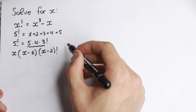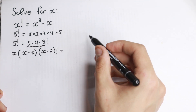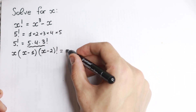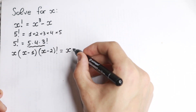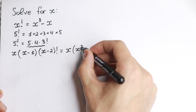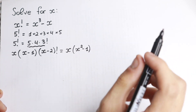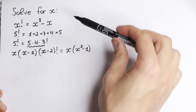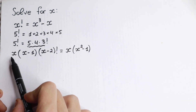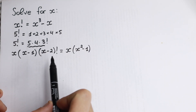On the right-hand side, we can factor out x: x times (x squared minus 1). So right here we factor out x, and on the left we write x factorial in the expanded form.